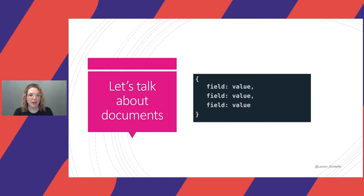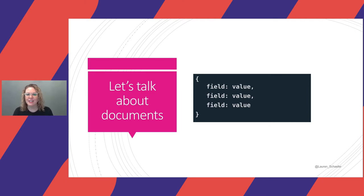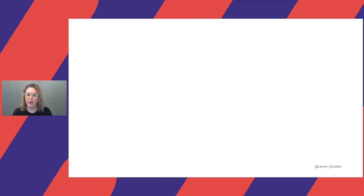When people talk about document databases, they'll often use the term non-relational. But that doesn't mean document databases don't store relationships. Document databases store relationships really well — it's just different than the way relational databases do. So let's walk through an example of how you would model the same data in a relational tabular database versus a document database. Let's say we need to store information about a user named Leslie.